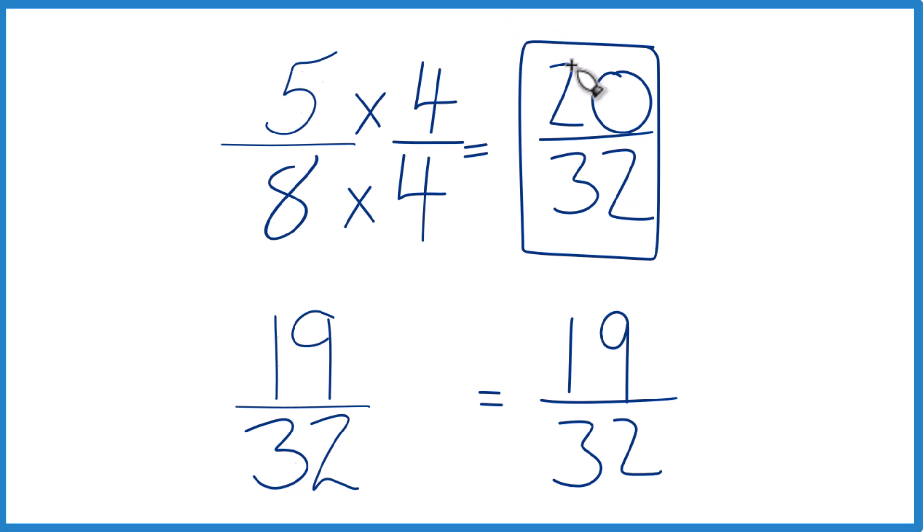Since these are equivalent fractions here, that means that 5 eighths, that's greater than 19 32nds as well.